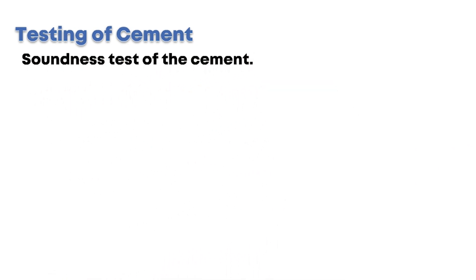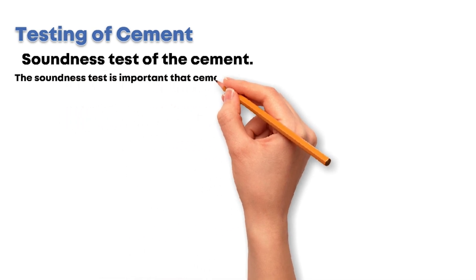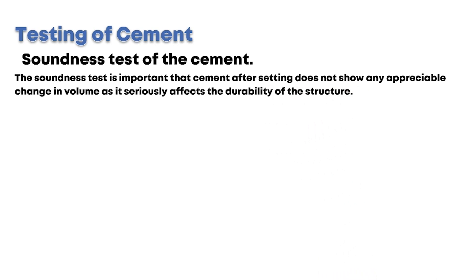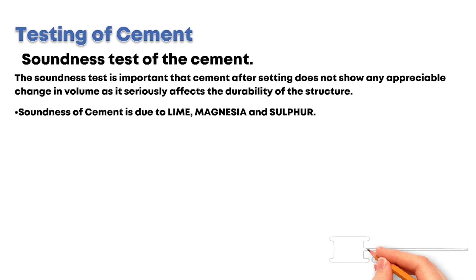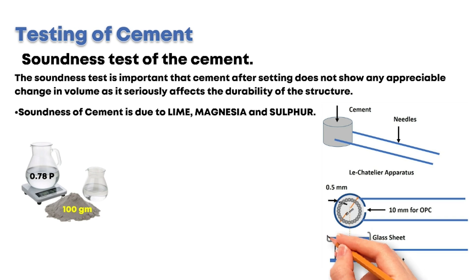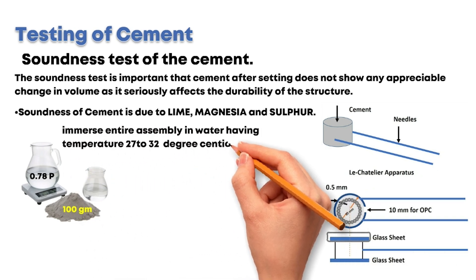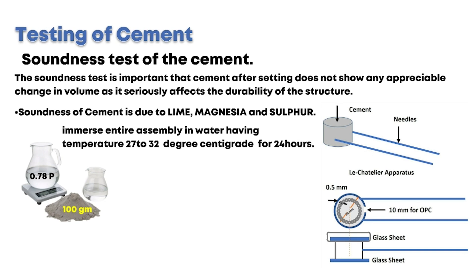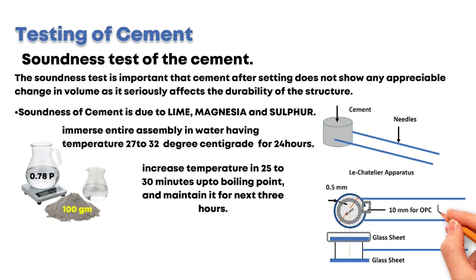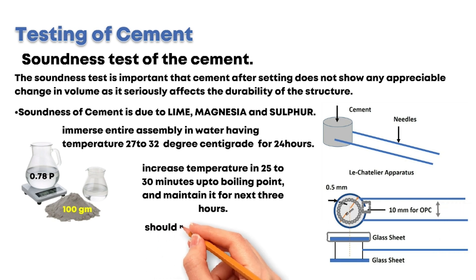Let's discuss the soundness test of the cement. It is important that cement after setting does not show any appreciable change in volume, as it seriously affects the durability of the structure. Unsoundness of cement is due to lime, magnesia, and sulfur. Gauge 100g of cement with 0.78 times consistency and fill the paste in the mold. Cover top and bottom with glass plates and immerse the entire assembly in water at 27 to 32 degrees centigrade for 24 hours. Remove the mold and note the displacement of the split with the help of indicator arms. Then immerse the entire assembly again, increase temperature over 25 to 30 minutes up to boiling point, and maintain it for the next 3 hours. Note the displacement of the split with the help of indicator arms. The difference in readings between both parts of the test should not exceed 10 millimeters for ordinary Portland cement.